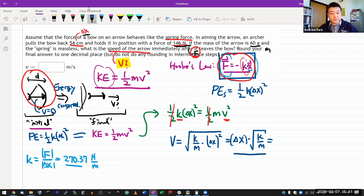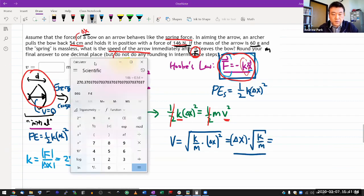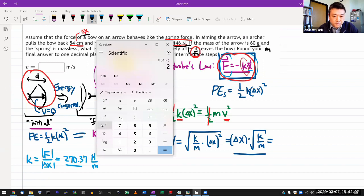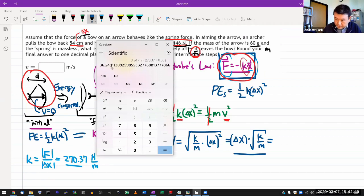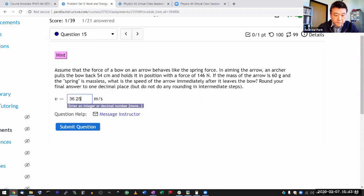That should give me an answer in meters per second. Delta X, once again, I'm using basic SI units. So, 0.54 times square root of, and I know how my calculator works, so I have to do the ratio first. So, 270.37 divided by the mass. So, 60 grams, I need a basic SI unit, so I'm going to do the kilograms, 0.06 kilograms in parenthesis, and then I think a square root. Okay, I'm just watching this input here to make sure I'm doing it correctly for my calculator. So, here, equals, okay, 36.25 meters per second. 36.25 meters per second. Yeah, 36.25.